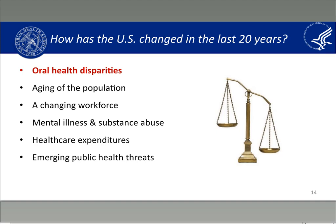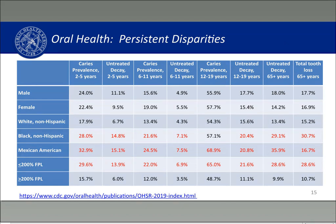One of the goals of the 2003 call to action was to reduce and eliminate oral health disparities. This table highlights some disparities across various disease conditions in different age groups. Comparing Black non-Hispanic Americans and Mexican Americans to white non-Hispanic Americans, you can see that across the board, Black non-Hispanic Americans and Mexican Americans suffer disproportionately from these different disease conditions when compared to white non-Hispanic Americans.